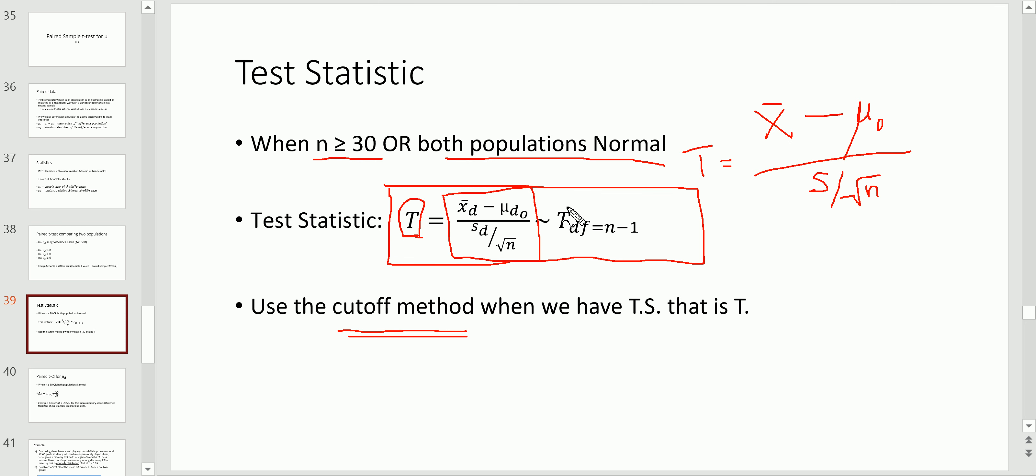Now here, since we've created this difference population, we've essentially reduced these two samples, this pre and this post, to this third sample called the difference sample. And here we can basically treat this as a single sample T test. But you should always know that this is the difference. So let's add these D's.